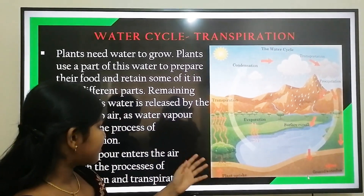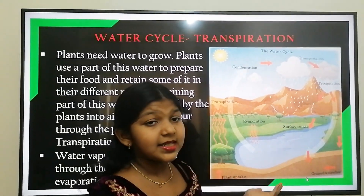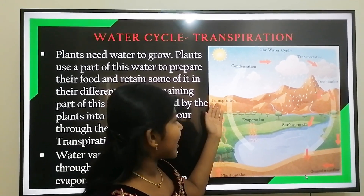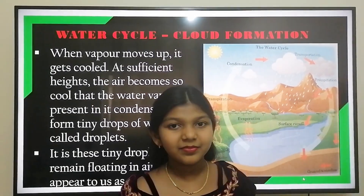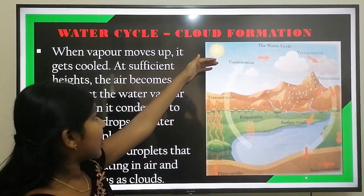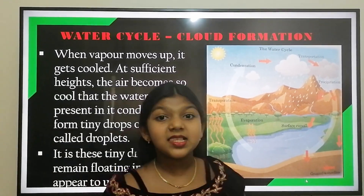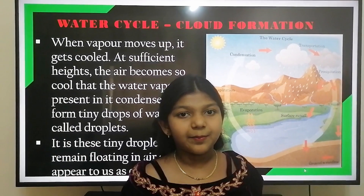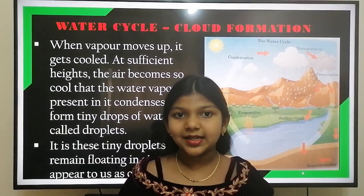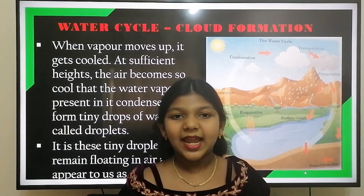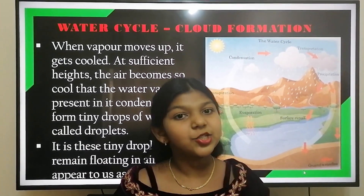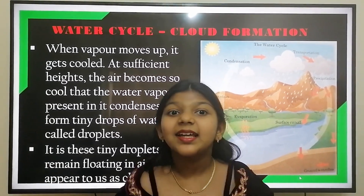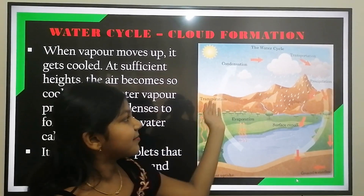As a result, water vapor enters the air through transpiration and evaporation. When vapor moves up, it gets cooled. At sufficient height, the air becomes so cool that the water vapor starts to condense and becomes tiny droplets of water. These tiny droplets remain floating in the air and appear to us as clouds.